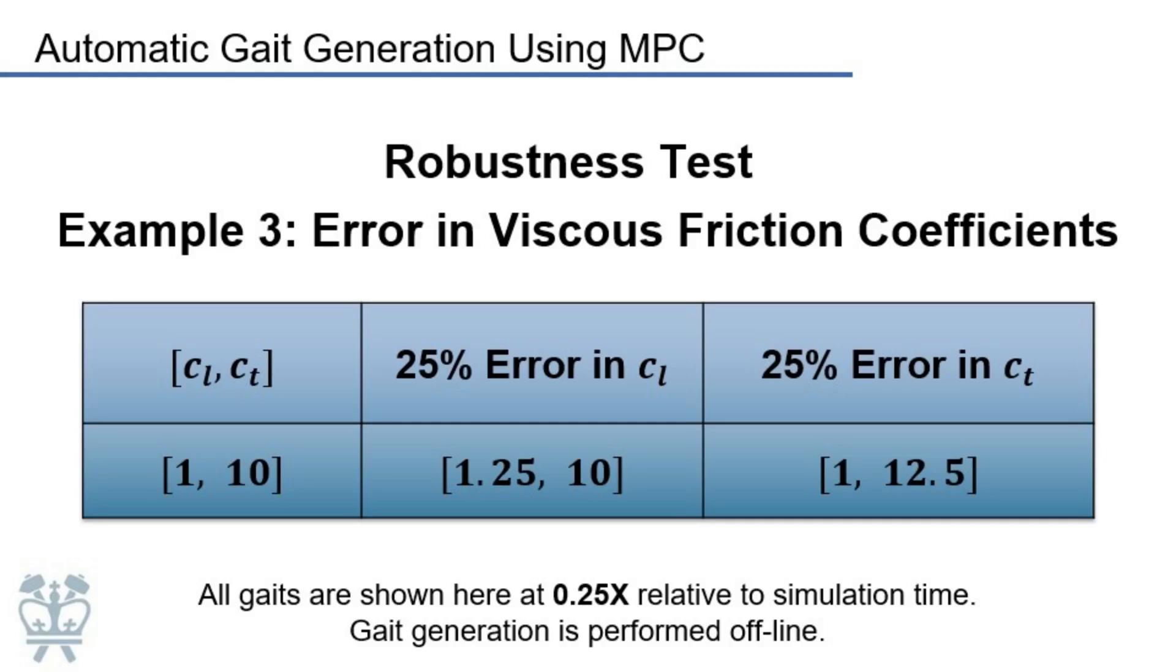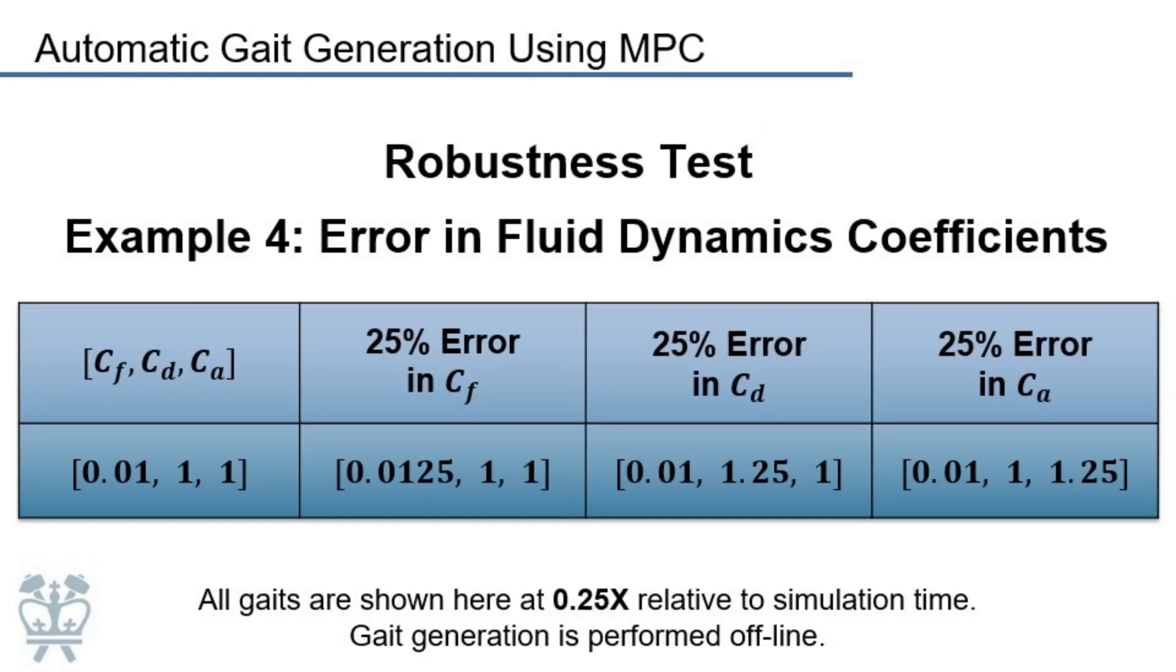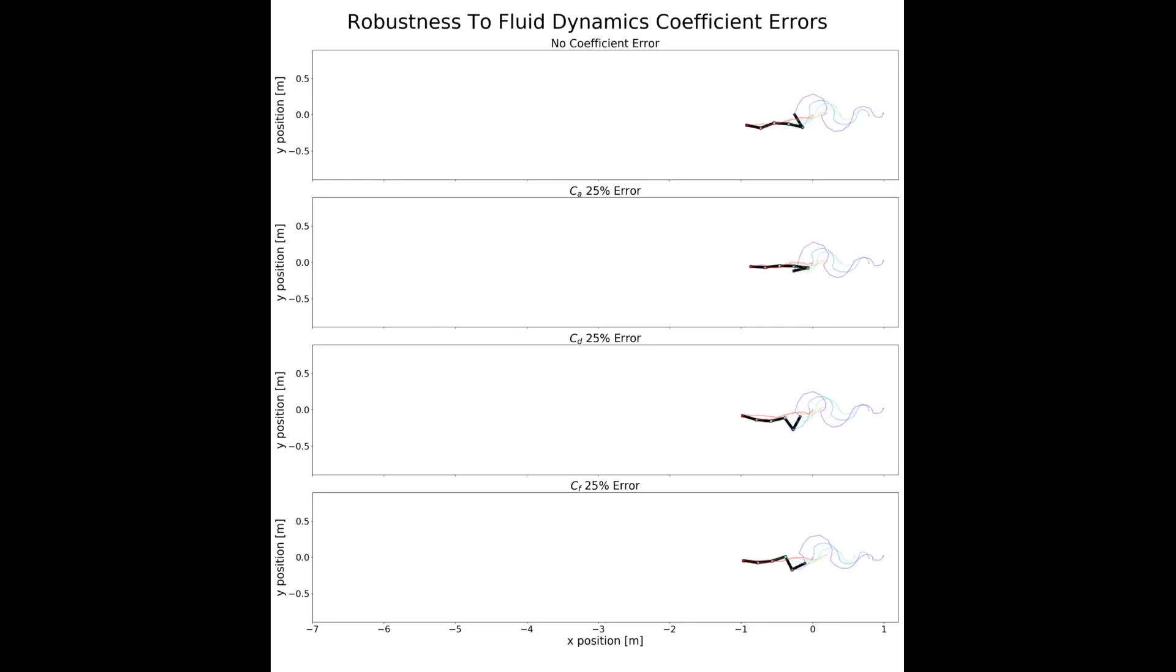We also test a 25% error to the coefficients of viscous friction emission in MPC's internal model. And finally, these are the results of adding error to the coefficients of fluid dynamics in MPC's internal model.